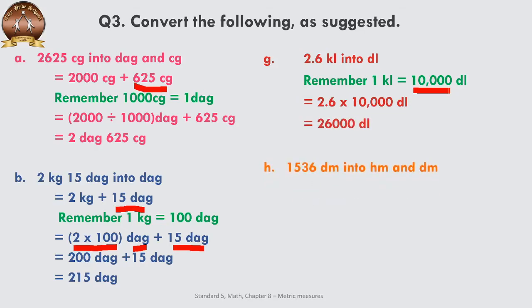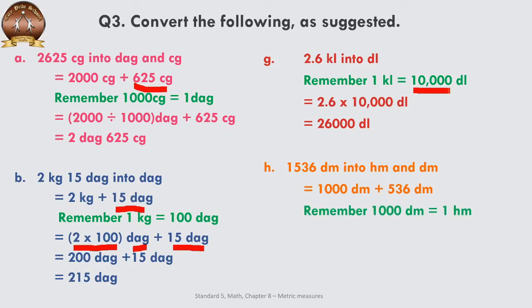The last question on the screen: 1536 decimetres into hectometres and decimetres. Decimetre is a smaller unit being converted into a bigger unit. Separate the 1536 decimetres into 2 parts. Remember that 1000 decimetres equals 1 hectometre, so the 1000 part is divided by 1000 and converted into hectometre while the 536 part remains as decimetres. 1000 divided by 1000 is 1, so the answer becomes 1 hectometre 536 decimetres.